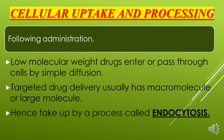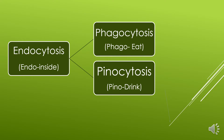Endocytosis is a cellular process by which a substance or drug is brought into the cell. Endocytosis is divided into two types: first, phagocytosis; second, pinocytosis. In phagocytosis, 'phago' means eat — it engulfs large substances into the cell. In pinocytosis, 'pino' means drink — it takes in fluid and solute along with dissolved small molecules into the cell.